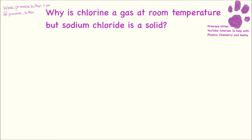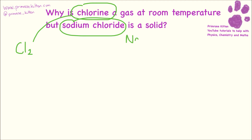The first thing we need to look at is what the question is actually asking. Chlorine gas is always going to be diatomic — there are two atoms — so you find chlorine as Cl2. Sodium chloride is NaCl. Sodium is a metal and chlorine is a non-metal, so NaCl is an ionic compound, whereas chlorine gas is covalent — and it's a small molecule, so it is a simple covalent compound.